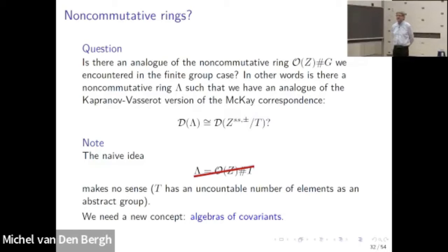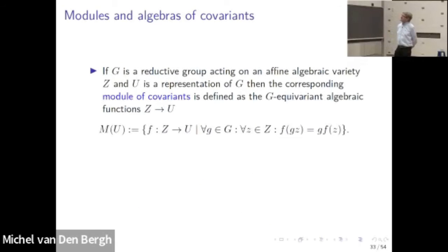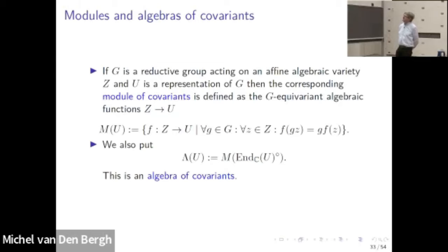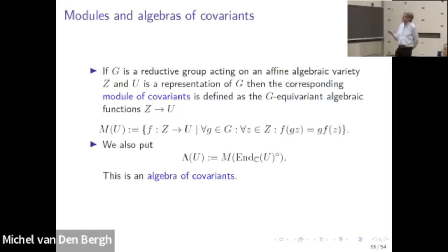The concept is that of covariants — these are actually pre-Hilbert's invariant theory. The modern interpretation is as follows: if we have a group acting on a variety and a representation, we can look at the functions from the variety to the representation which are equivariant for the group. We use this in a specific case: if we have a representation and take the endomorphisms, that's a finite-dimensional algebra. If I then take the covariants, that actually gives me an algebra — I call this an algebra of covariants. If we have a finite group and take the direct sum of all distinct irreducible representations, then this algebra of covariants is not exactly the cross product, but it has the same module category, so it's just as good.